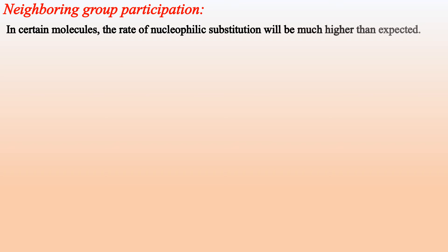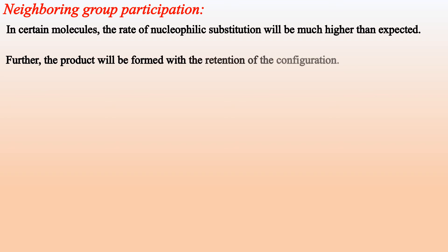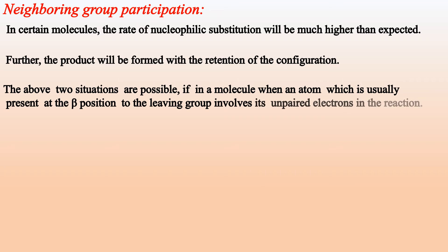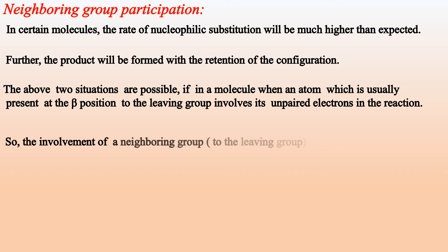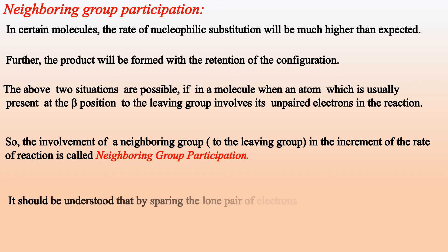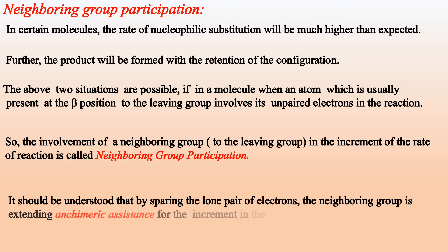Neighboring group participation: in certain molecules, the rate of nucleophilic substitution will be much higher than expected, and the product will be formed with the retention of configuration. This is possible if an atom, usually present at the beta position to the leaving group, involves its unpaired electrons in the reaction. The involvement of a neighboring group in the increment of the rate of reaction is called neighboring group participation. By sharing the lone pair of electrons, the neighboring group extends anchimeric assistance for the increment in the rate of the reaction.